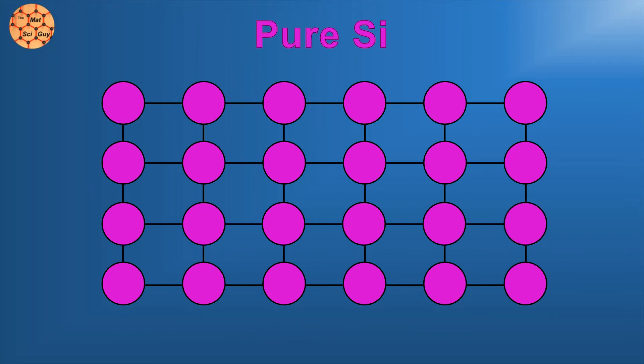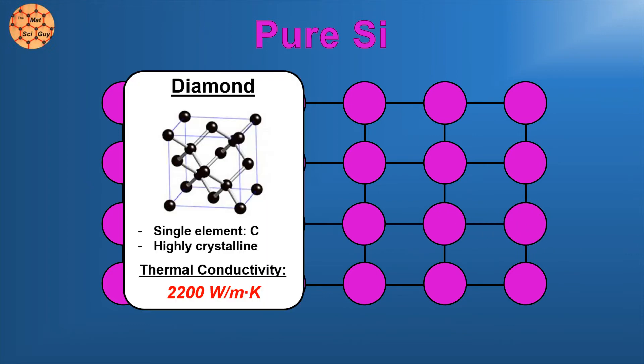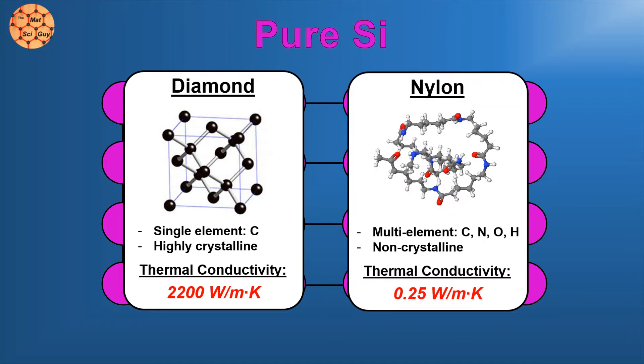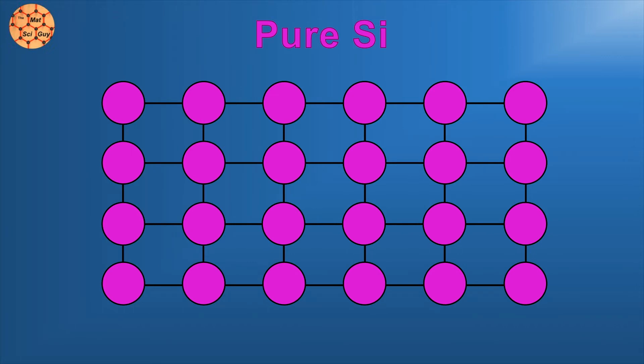That's why a material like diamond is an incredible thermal conductor. It's a pure crystalline element, carbon, connected with strong covalent bonds. On the other hand, most plastics are thermally insulating because they're basically made up of amorphous carbon-based chains. Basically, phonons are a periodic vibration, so when you have atoms that are well arranged and all the same, it makes it easy for them to travel. If you put an atom that isn't silicon into this nice arrangement, suddenly it's not so easy.